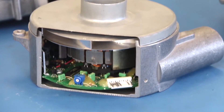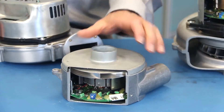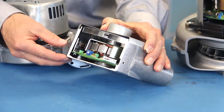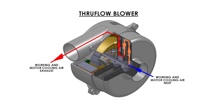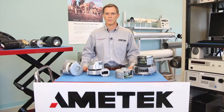A through-flow blower design does not have a steel motor enclosure, and the power connection is made through the die-cast aluminum blower housing. In a through-flow design, the working air and motor electronics cooling air are one and the same, being intermixed within the blower. This provides for a smaller overall blower package. However, the blower may be limited in performance and capability by the working air temperature and cleanliness of the air.